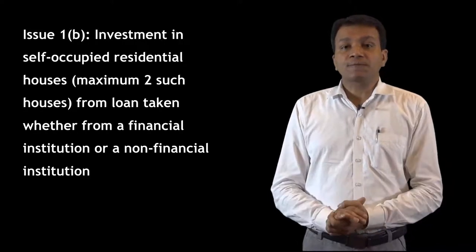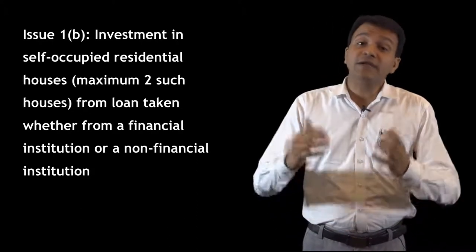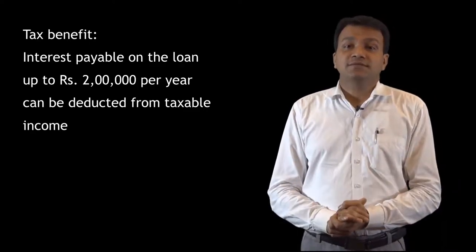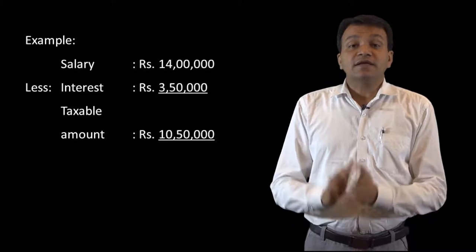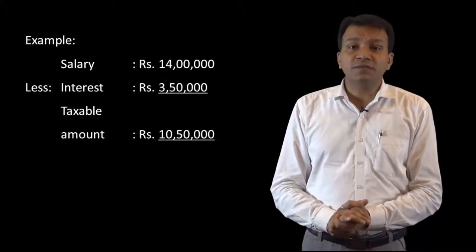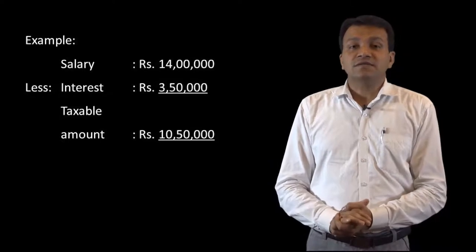Apart from this, we have one more deduction on this interest amount. If I have a self-occupied house property and I have taken a loan from a financial institution, non-financial institution, or even from a relative, then up to Rs 2,00,000 interest payment I can also claim as deduction. So there are basically two sections: up to Rs 2,00,000 under one section and up to Rs 1,50,000 under another section. Combined, up to Rs 3,50,000 per year on account of interest payment is allowed to a person purchasing a residential house property.